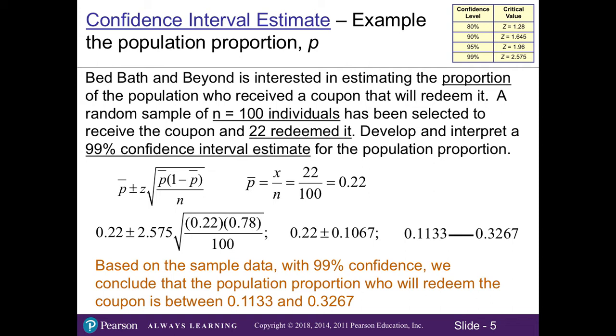Now you might think, wow, that's a big interval. So if we want to improve our margin of error and thus make our confidence interval estimate smaller, we would either lower our confidence level and or increase our sample size.